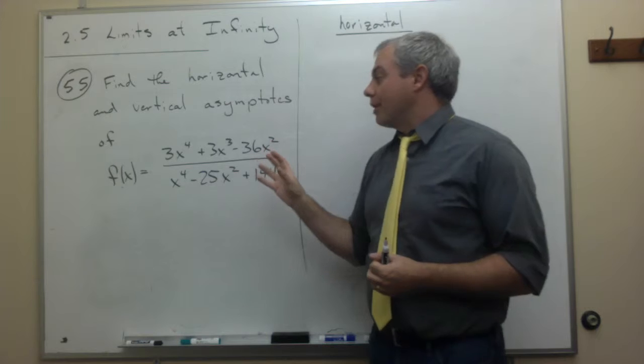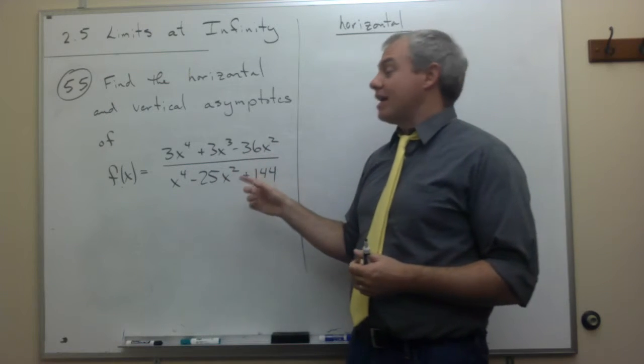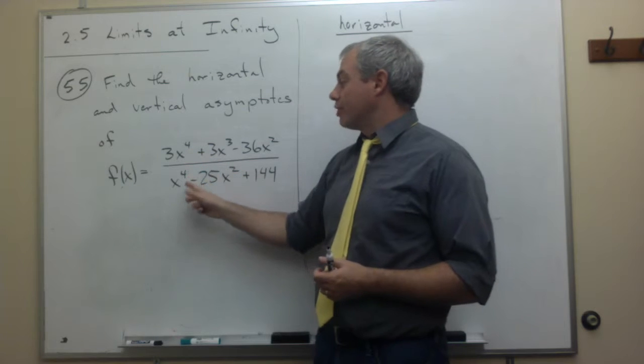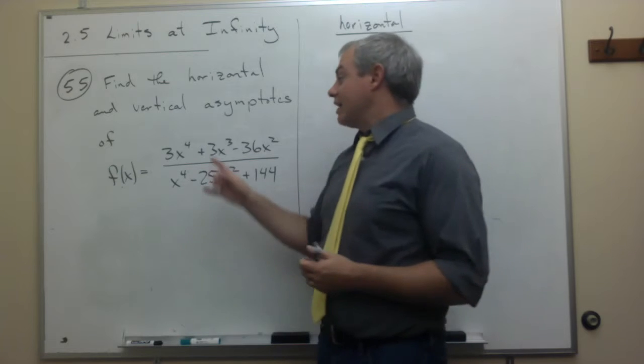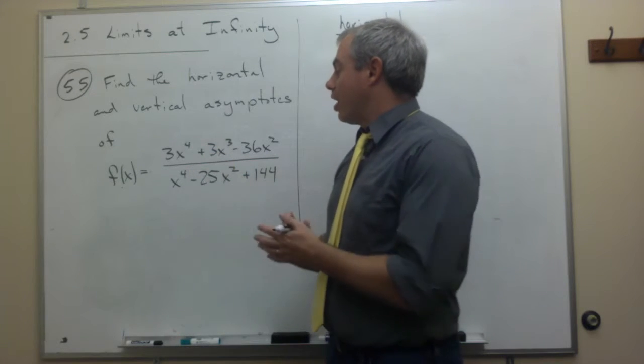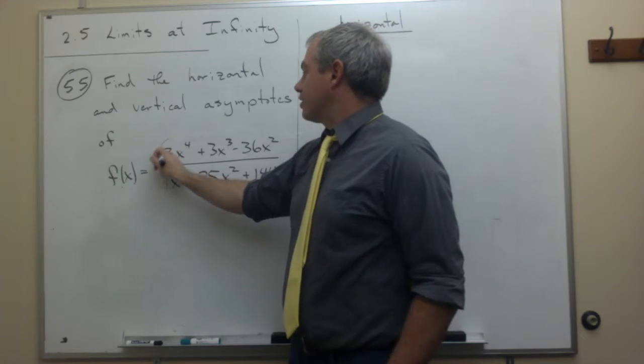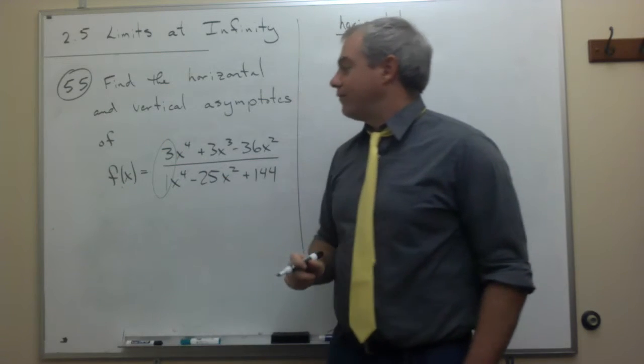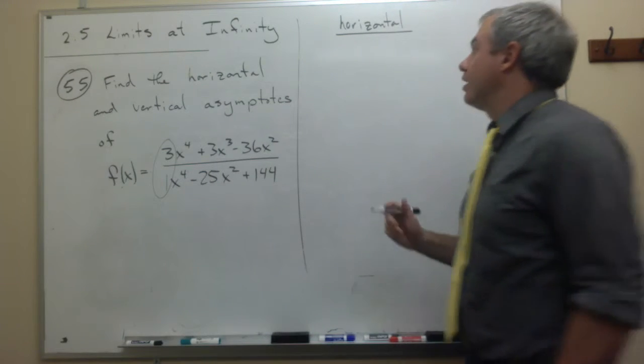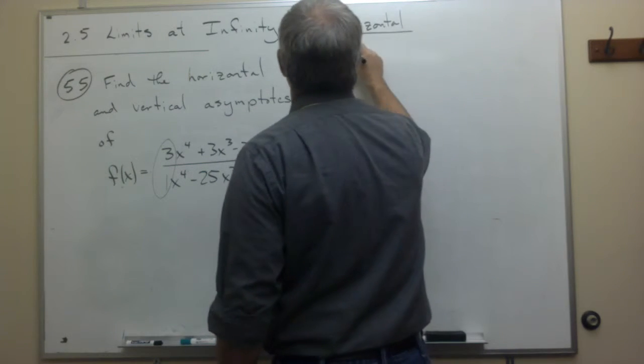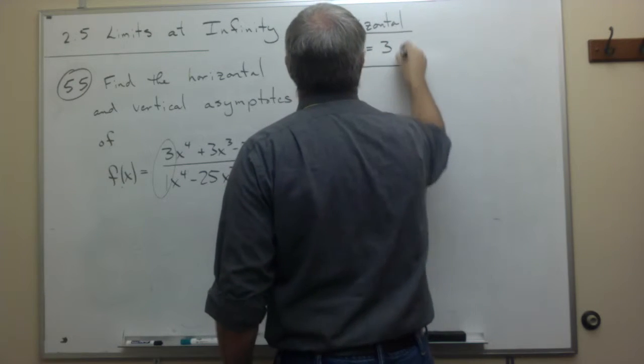We've already been through this - the first thing we do is find the highest power of x on the top or the bottom. In this case, the highest power of x is 4, and it's the same on top and bottom. So I can just look at the coefficients of the x to the fourth terms. In this case, it's 3 over 1, and so the horizontal asymptote is y equals 3.